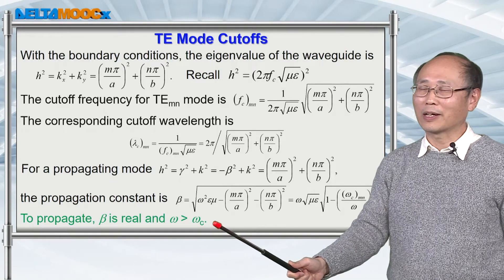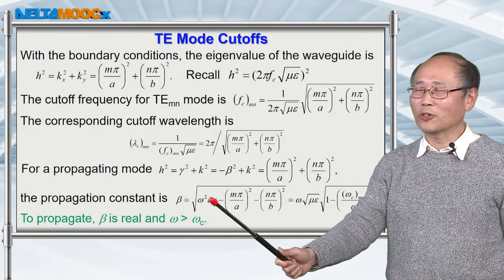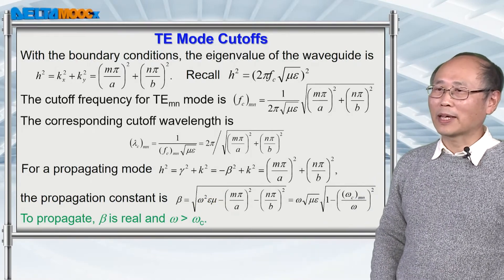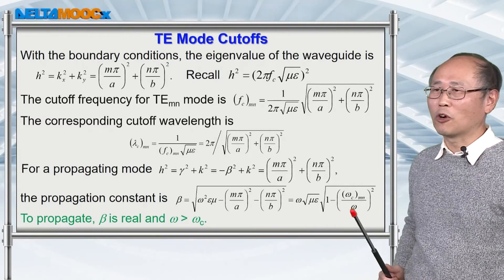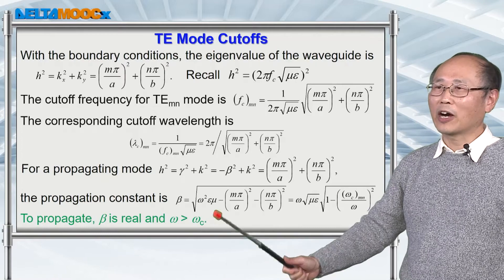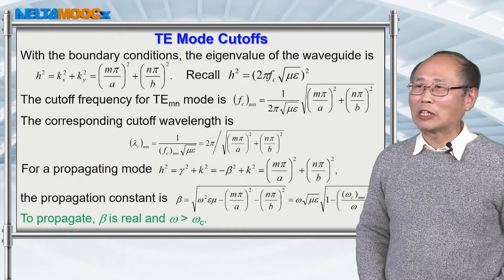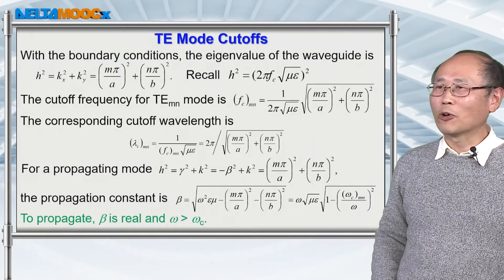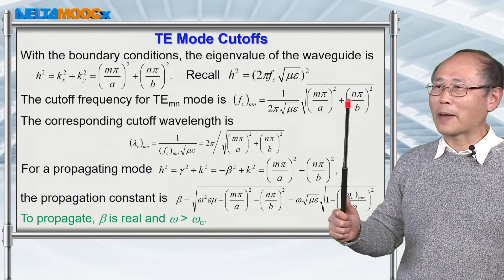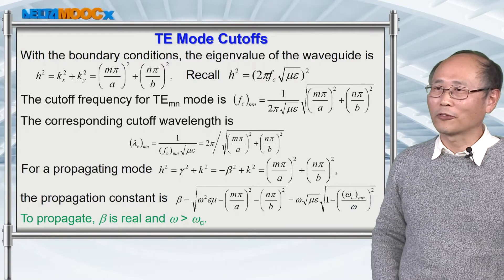You can calculate the propagation constant associated with this TE mode. The conclusion is that to have a propagating mode inside the waveguide, beta has to be a real number. This means the operation frequency omega must be larger than the cutoff frequency. For different modes with different m and n values, there will be different cutoff frequencies.